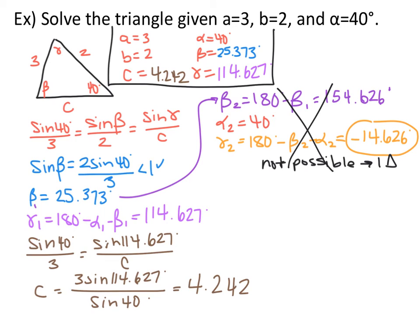Finishing the first triangle: gamma 1 equals 114.627 degrees, and using law of sines, C equals 4.242. Remember, when solving law of sines problems, you can have angle-side-angle or angle-angle-side problems, or the ambiguous case, which is angle-side-side — where you must test to see if there are 0, 1, or 2 triangles.